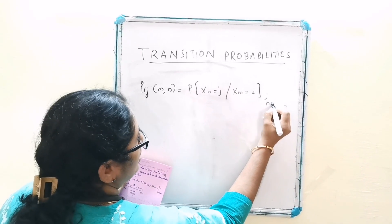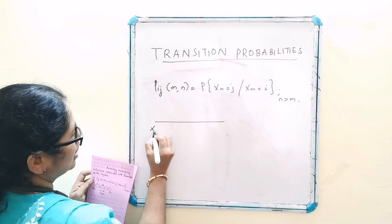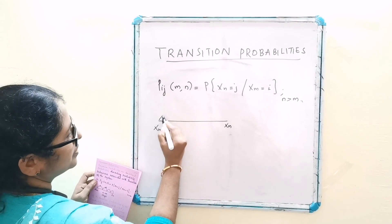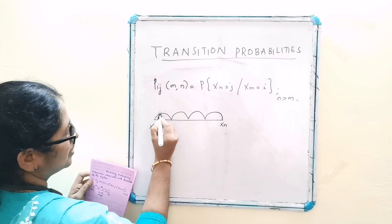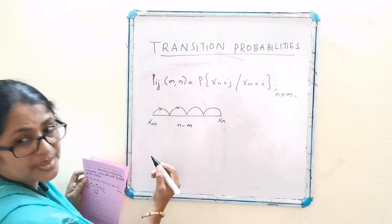This n is Xn. Here we have n minus m steps.